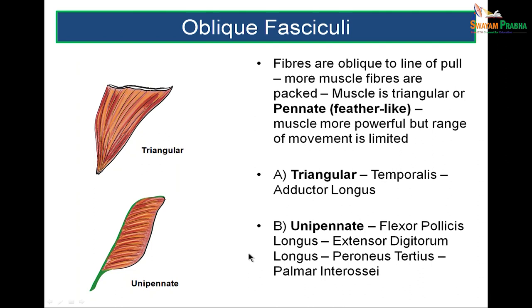Oblique fasciculi are more powerful muscles because more muscle fibers get packed in, and they assume a pennate, feather-like appearance. Classified into: triangular (examples: temporalis and adductor longus), unipennate with fibers running in one direction to a tendinous attachment (examples: flexor pollicis longus, extensor digitorum longus, peroneus tertius, palmar interossei).